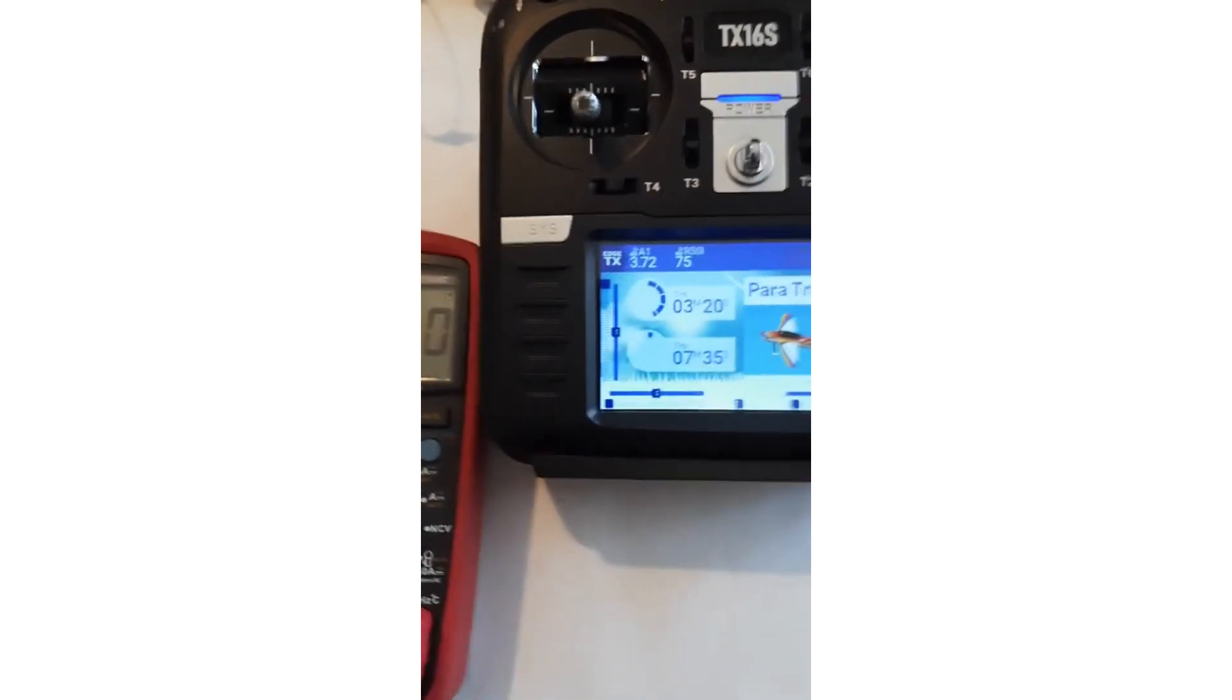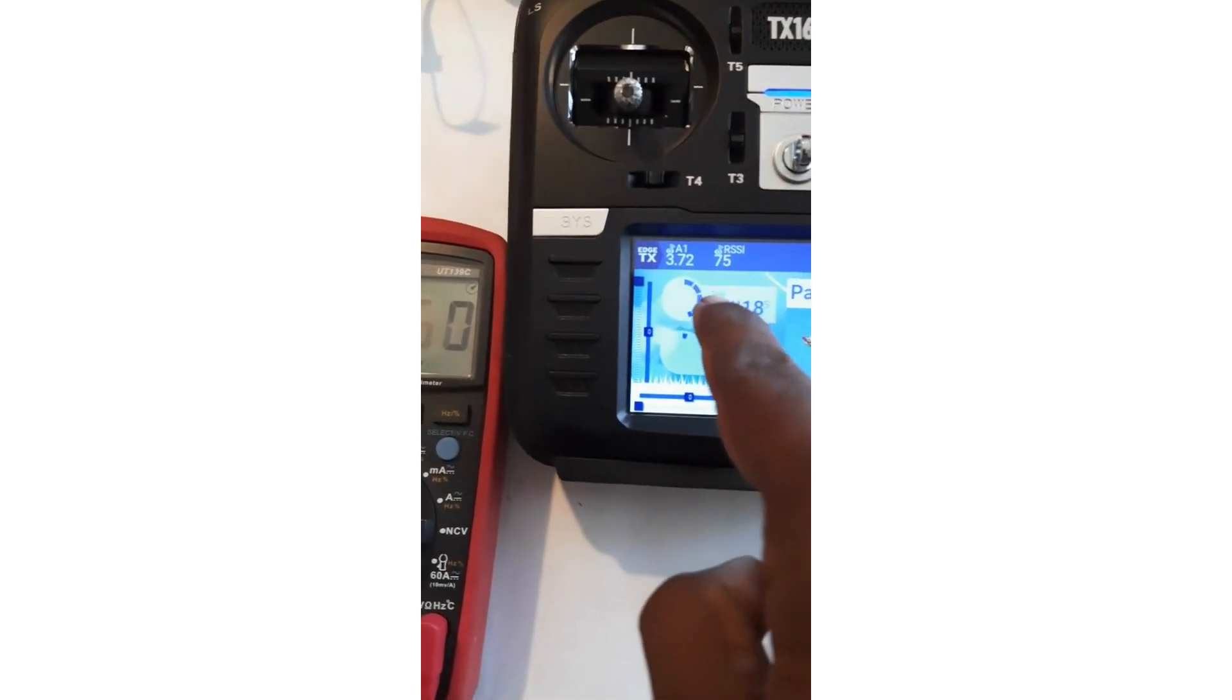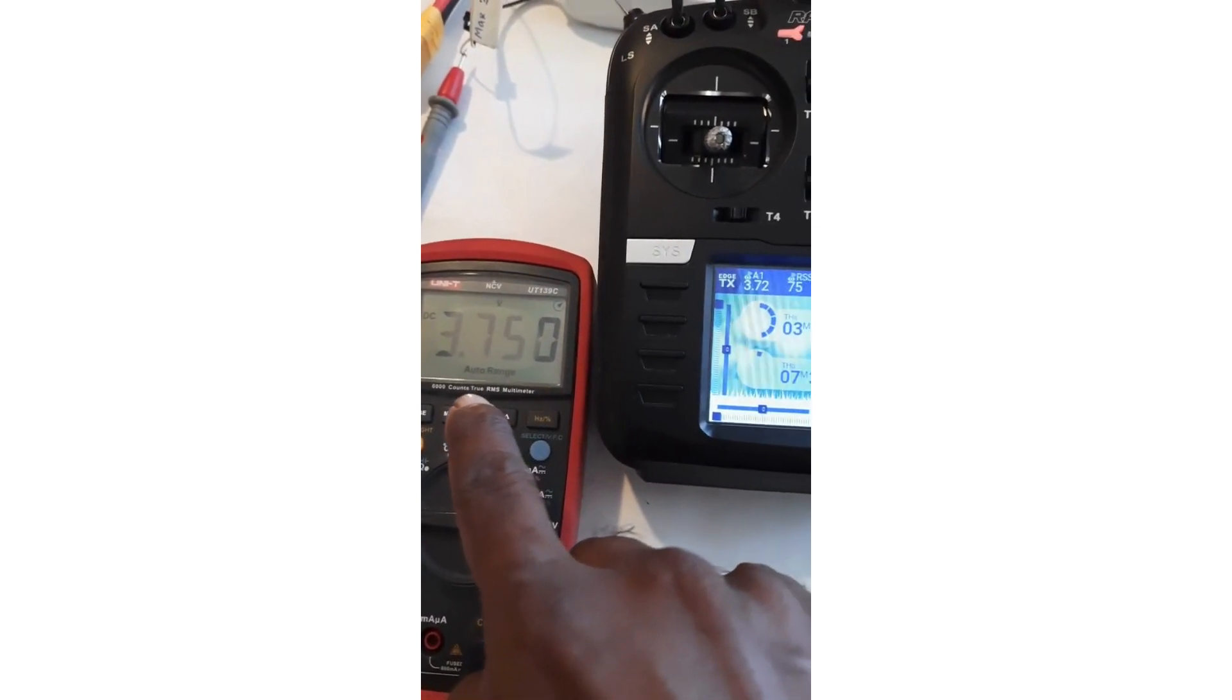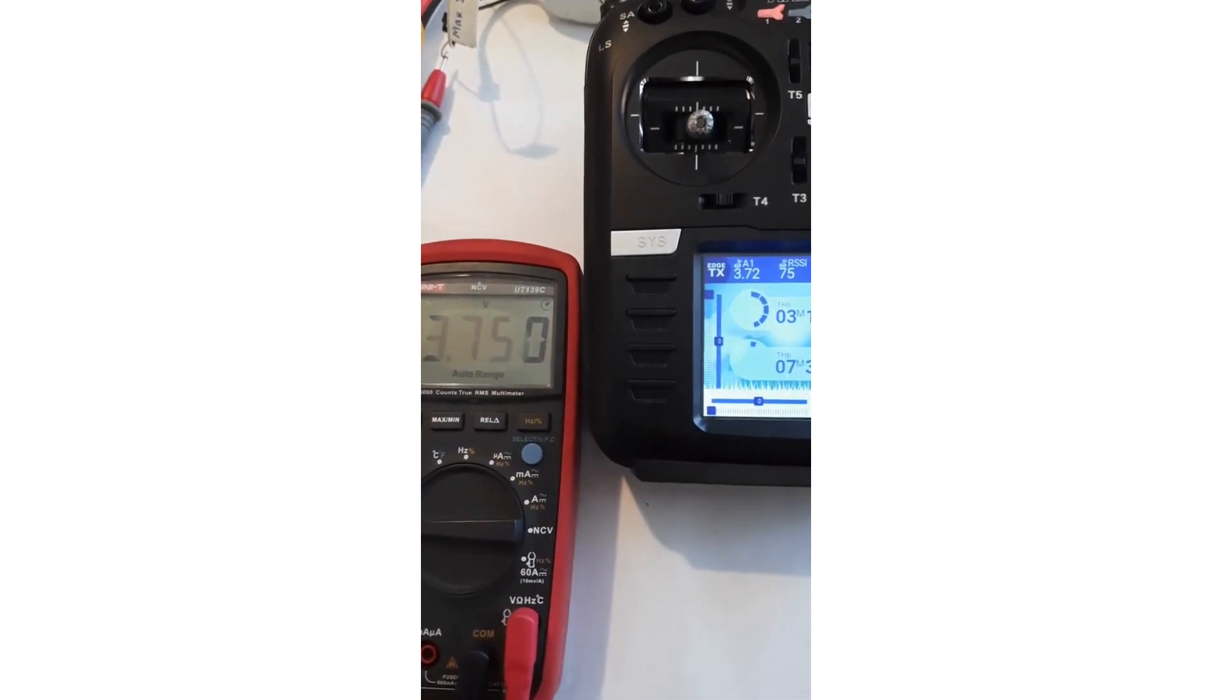So it shows 3.72 because it is the first cell. And here again it shows 3.75. It is almost pretty accurate.